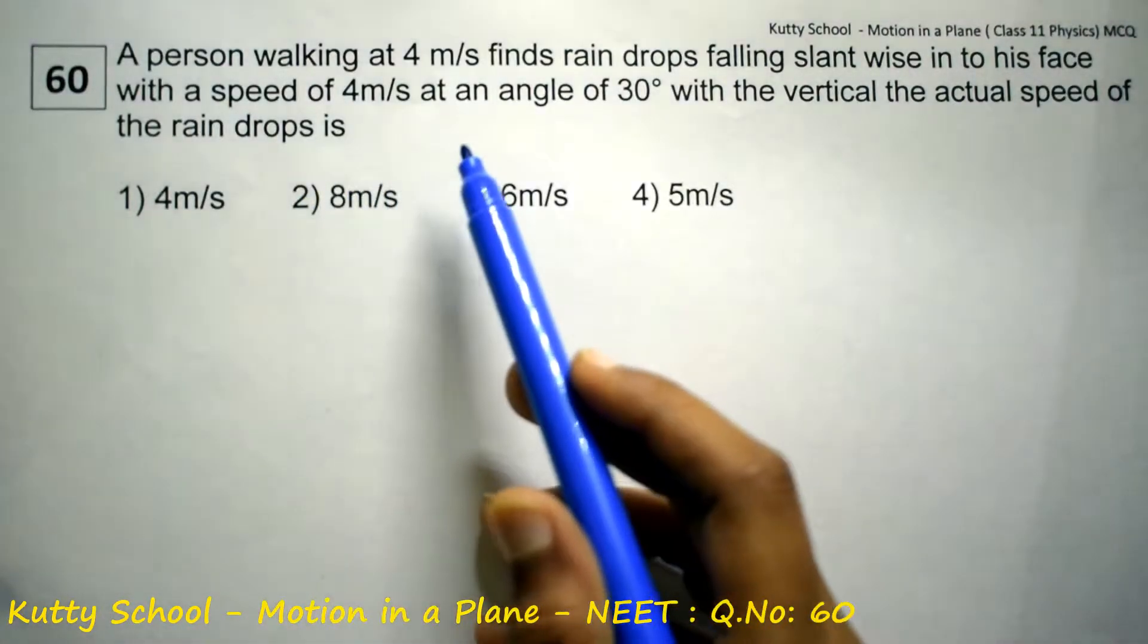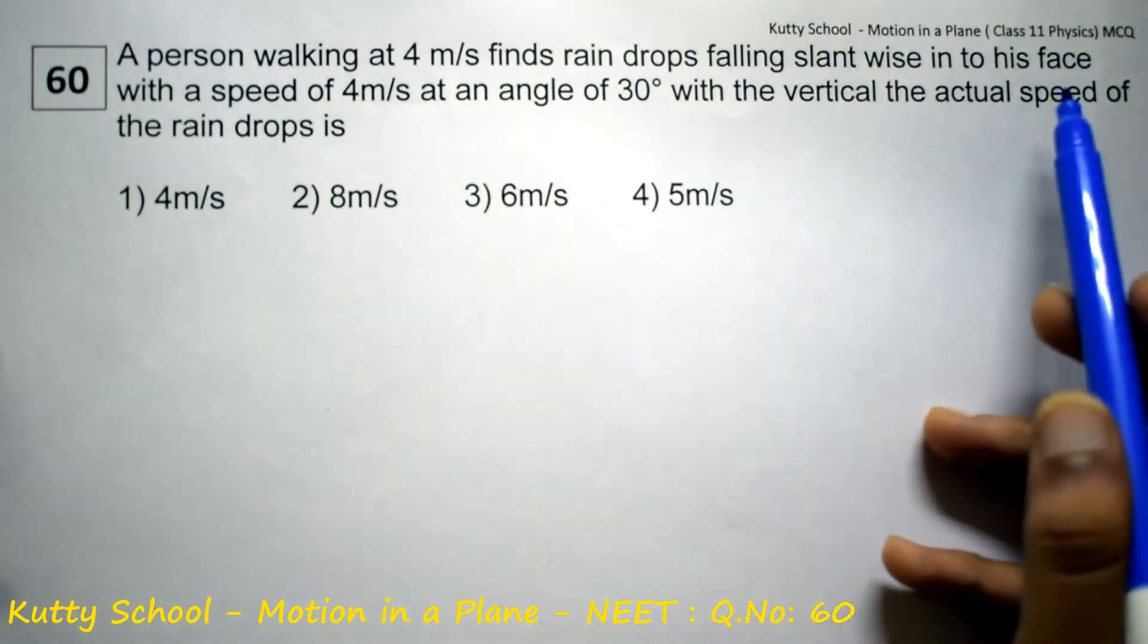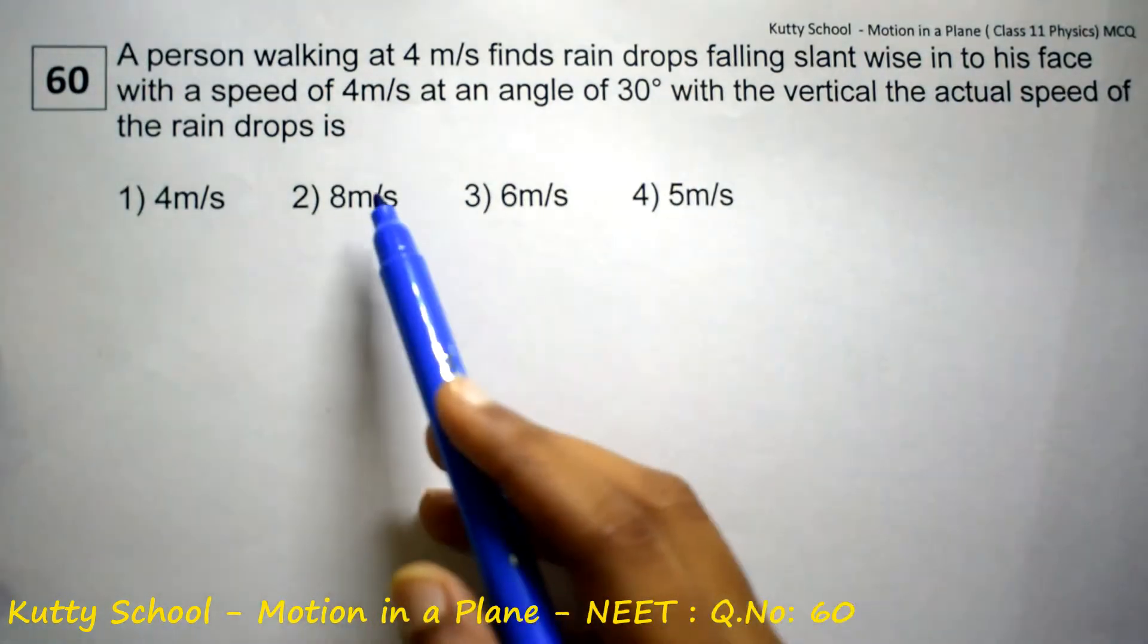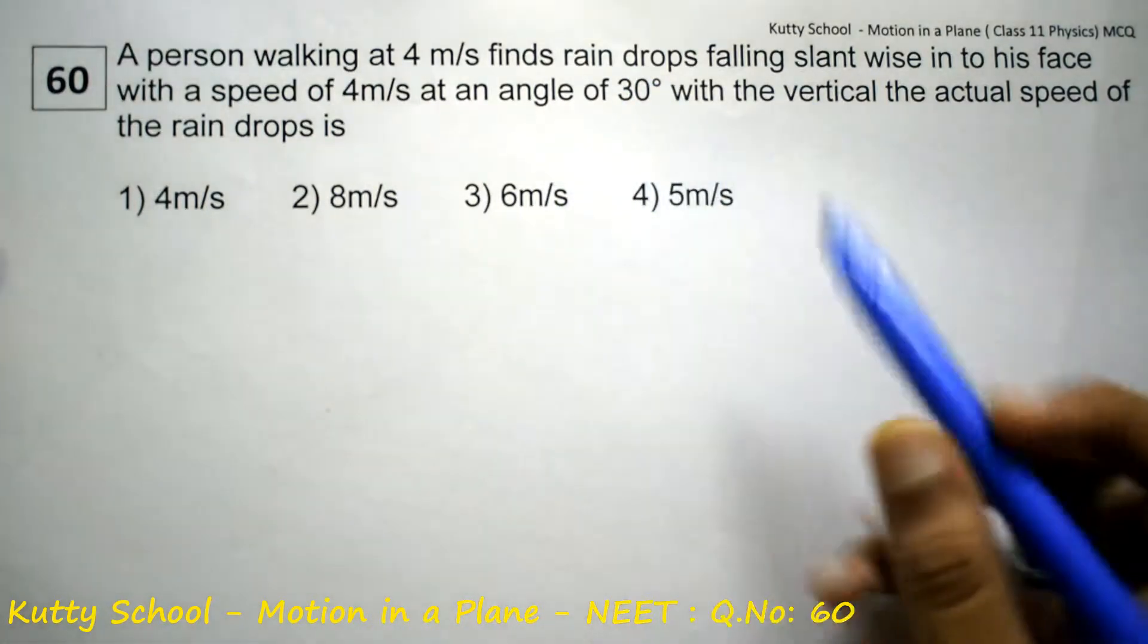A person walking at 4 meters per second finds raindrops falling slantwise to his face with a speed of 4 meters per second at an angle of 30 degrees.